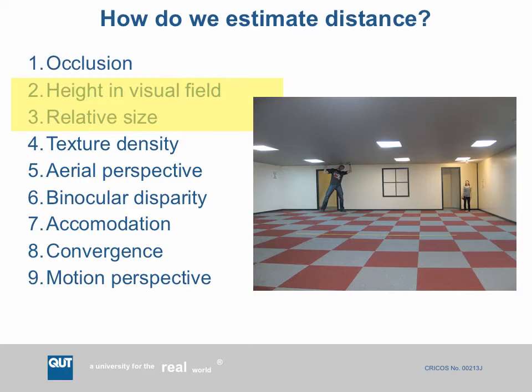Another cue is texture density. Looking at a gravel path, close up the gravel is quite coarse — the individual stones appear large. As we go further away the stones appear to be smaller, so up close it's a very coarse texture and further away it's a much finer texture. We unconsciously evaluate the texture of things, assuming the texture of the material is constant, and the change in apparent texture tells us something about distance.